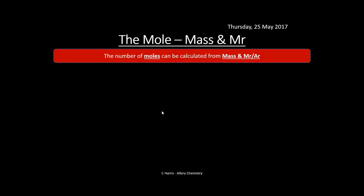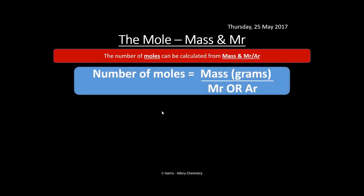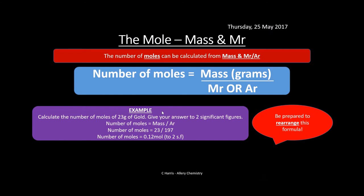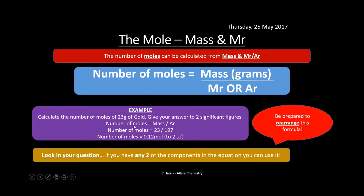The number of moles can be calculated from the mass and the Mr or Ar: moles = mass (g) ÷ Mr (or Ar). For example, calculating the number of moles of 23 grams of gold (Ar = 197): moles = 23 ÷ 197 = 0.12 mol (to 2 significant figures). Be prepared to rearrange this formula. If you know any two of the three components (moles, mass, Mr/Ar), you can work out the third.